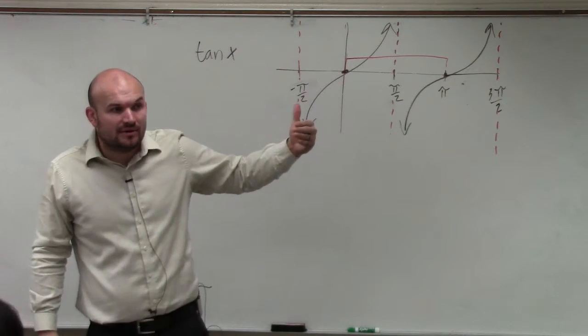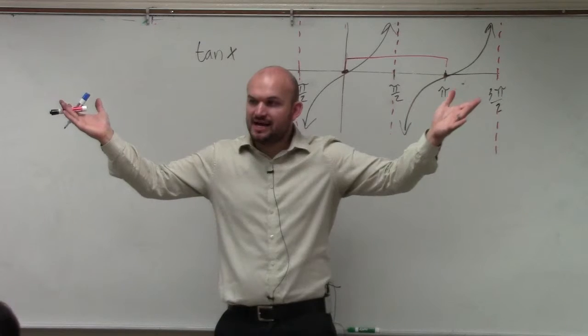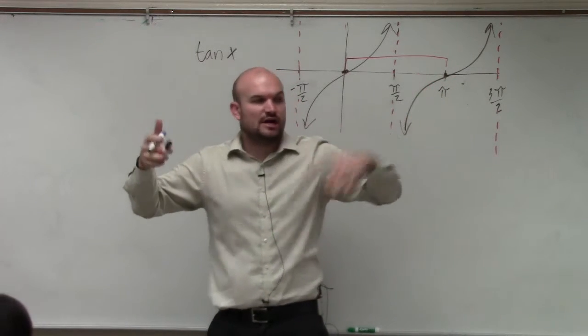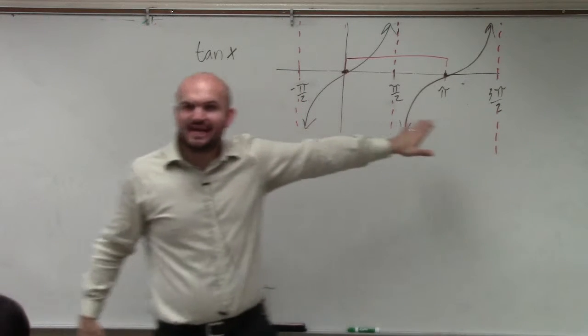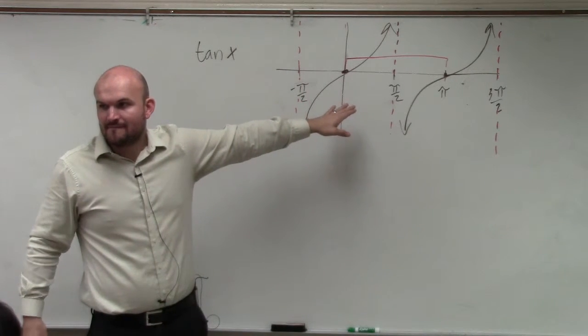Pi, right? So remember, for sine and cosine, the initial period, it started repeating itself at 2 pi, right? Whereas tangent now repeats itself at pi.